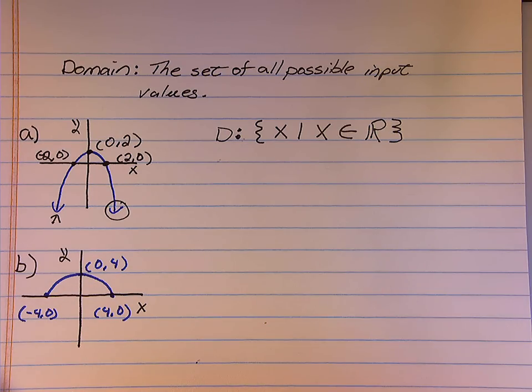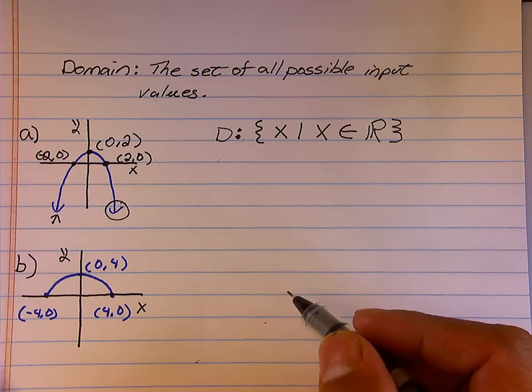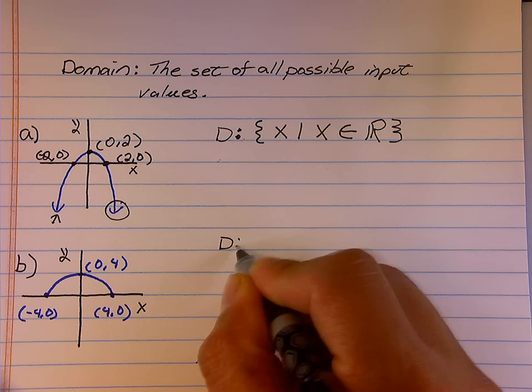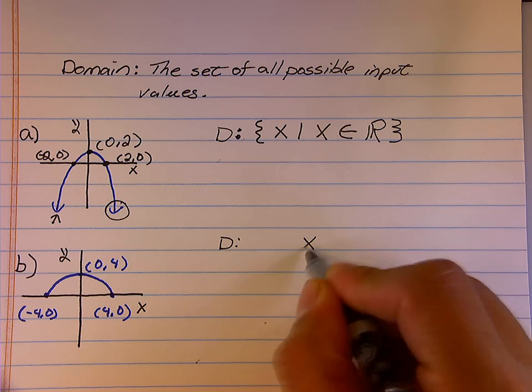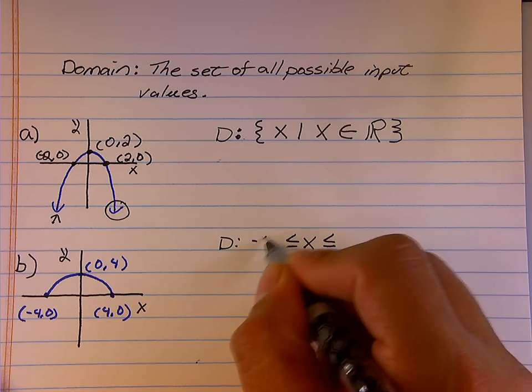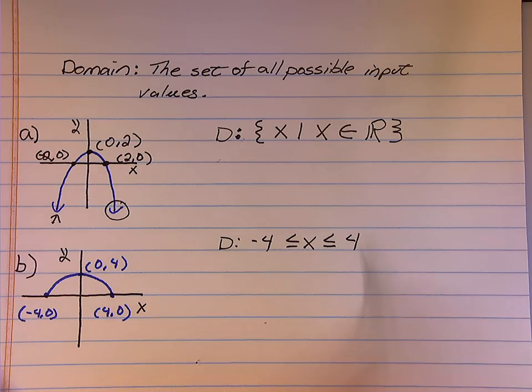So a couple different ways we can write this. In words, it would be easiest to say that my x is in between negative 4 and positive 4. But in mathematics, we're going to write this in a couple of different ways. I'm going to first start off using an inequality notation.